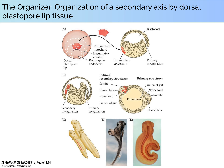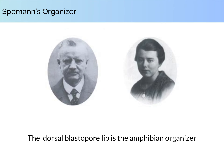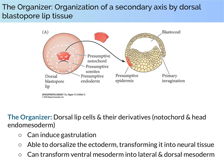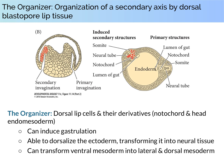Additionally, the dorsal blastopore lip cells were able to alter the fate of surrounding cells, causing those cells to give rise to tissue types they normally would not. Eventually, a secondary embryo formed, conjoined at the face with its host. Spemann and Mangold called this region the amphibian organizer. The amphibian organizer is composed of those dorsal lip cells and their derivatives — specifically the notochord and the head endomesoderm. The organizer can induce a new site of gastrulation so that a secondary dorsal-ventral and anterior-to-posterior axis forms when this tissue is transplanted to a new host.